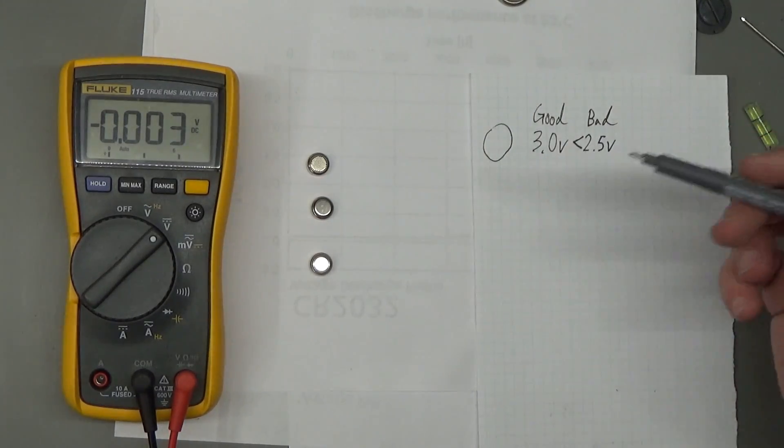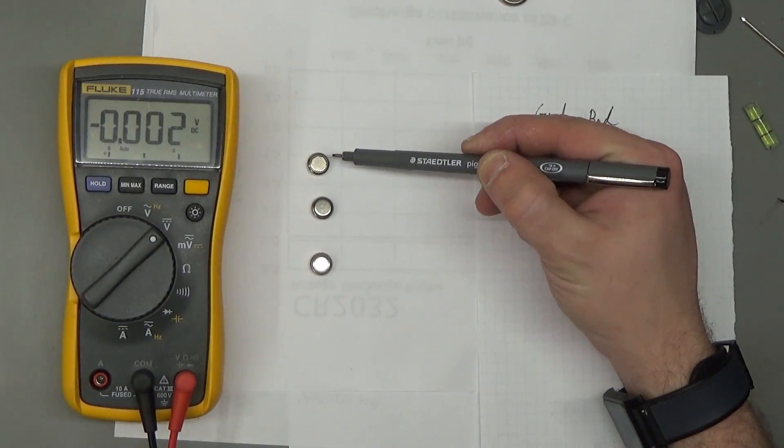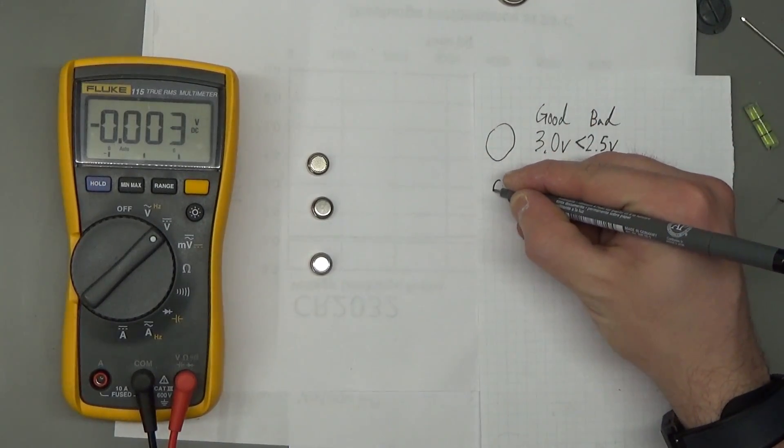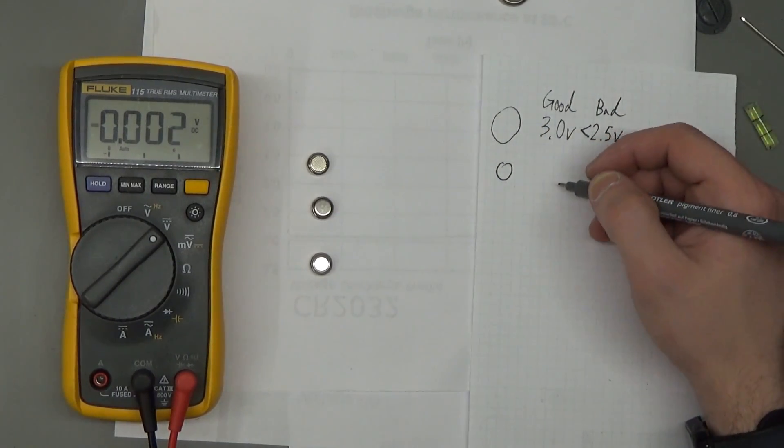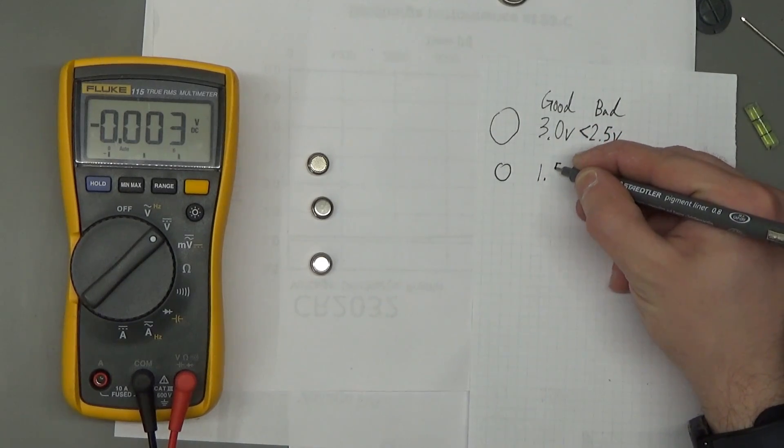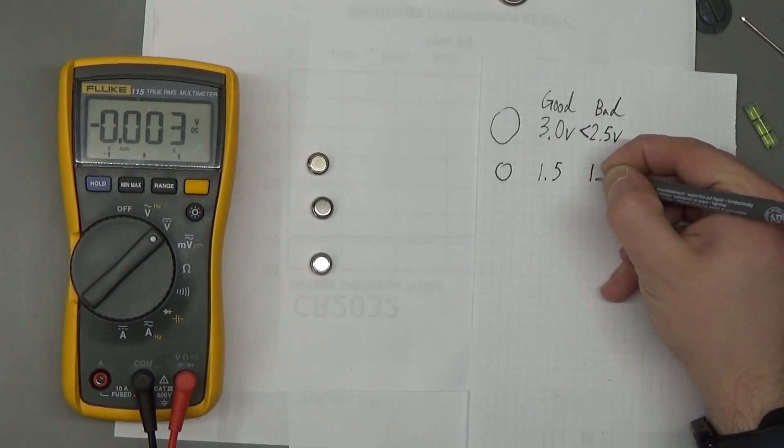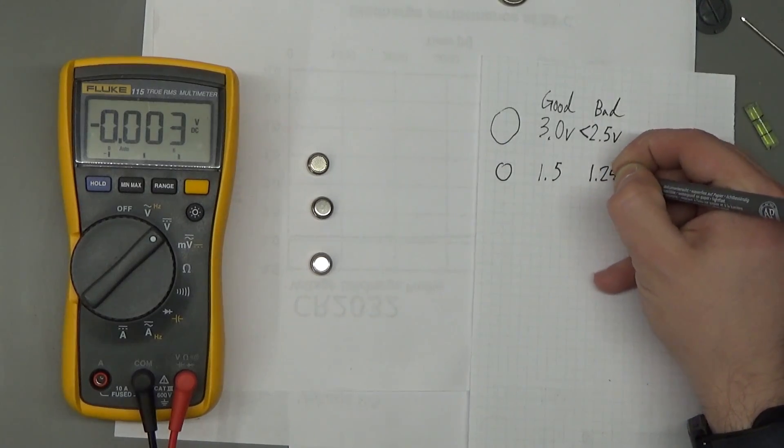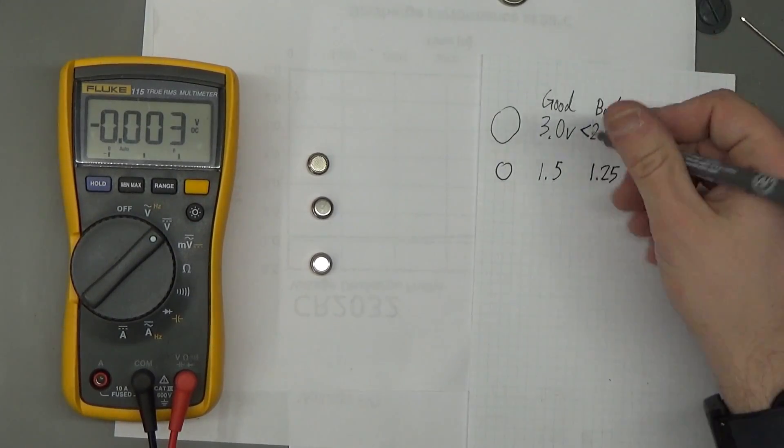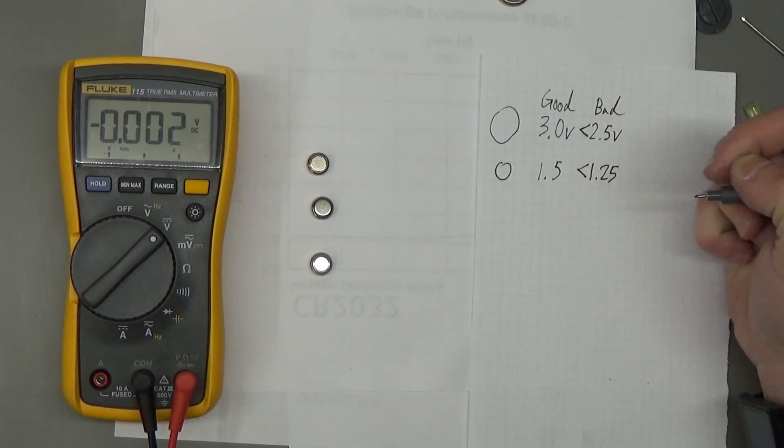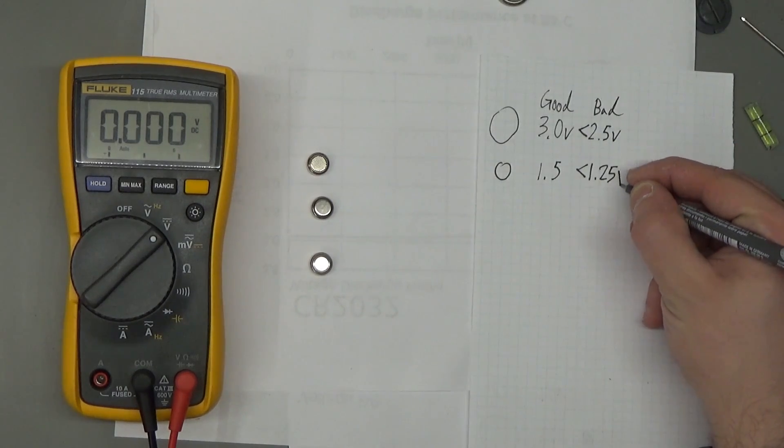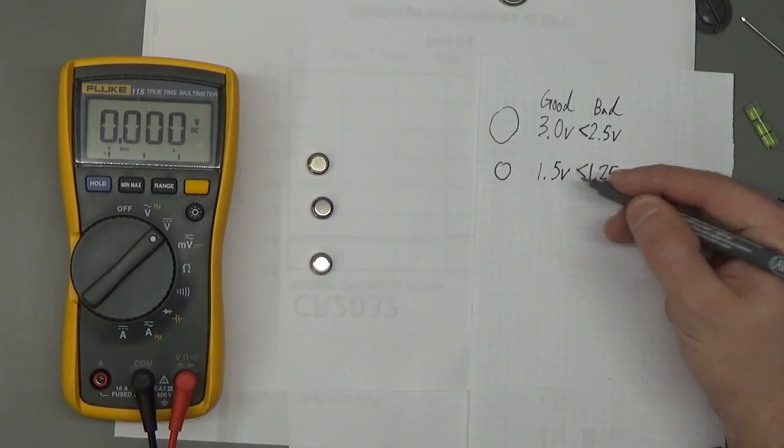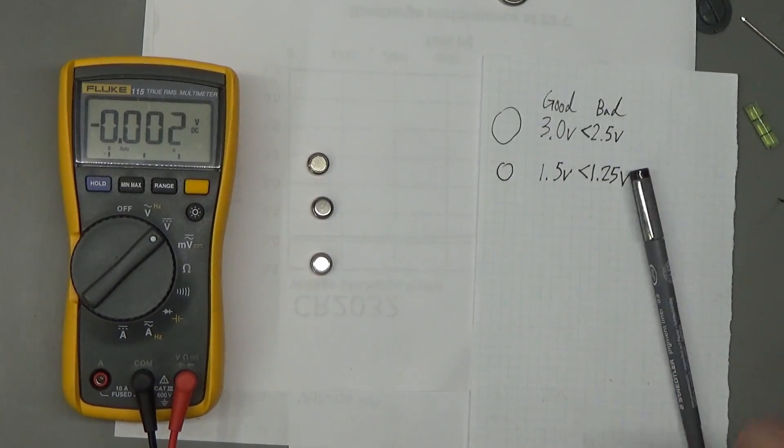And when it comes to button cells, as I'll call them, roughly the size of a button—a little smaller—you can just divide those two numbers by two and you'll have the good voltage and the bad voltage. You don't really have to get to that level of precision, but just to keep it consistent, I'll do that. So if you measure 1.5 volts or greater, that's a good battery. If you measure less than 1.25 volts, that is a bad battery and you'll want to recycle that.